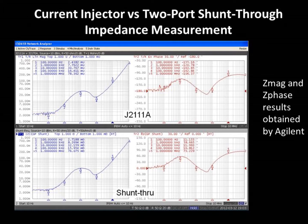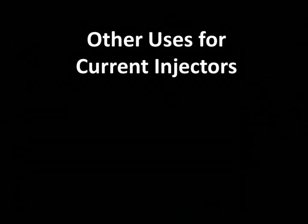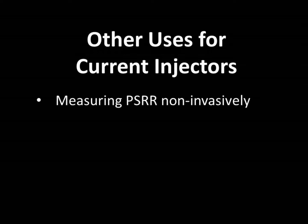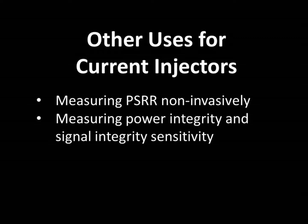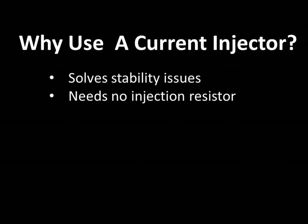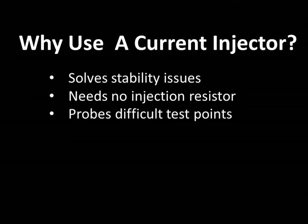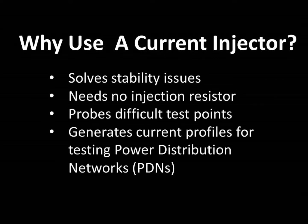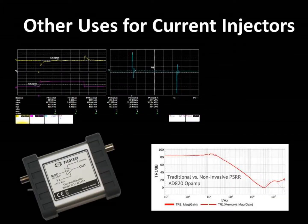As useful as they are in measuring impedance, current injectors can also help with other types of measurement. Some engineers use current injectors to create a line disturbance, either for non-invasively measuring PSRR, or to create a disturbance to measure sensitivity of power integrity and signal integrity to such test signals. There are several benefits to using current injectors in non-impedance measurements: current injectors can assess stability, don't require an injection resistor, can be used in confined spaces, and can generate time domain current steps or profiles.